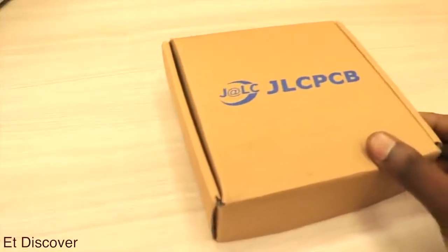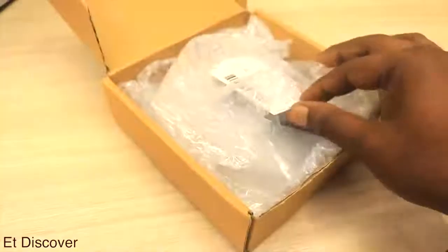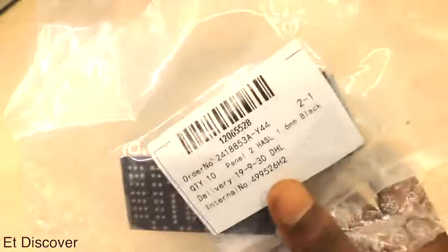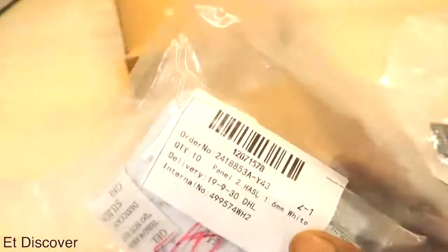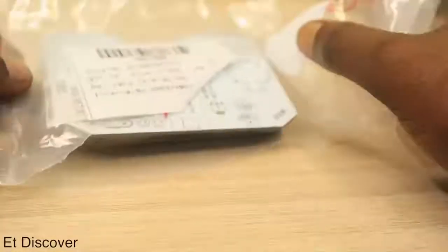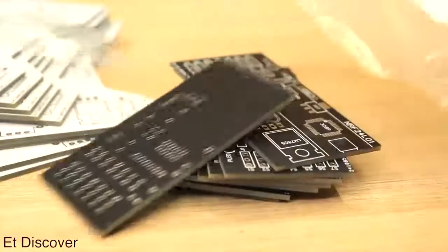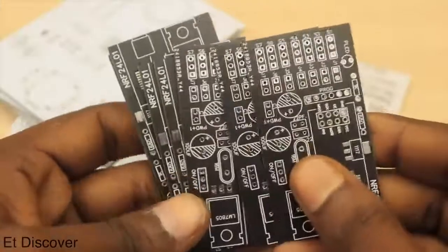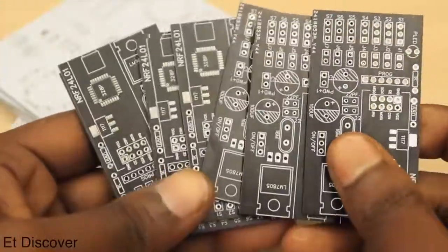After seven days later I received a box from JLCPCB. I found both PCBs in the same package as I expected. In this first look anyone can say the PCB is really awesome. If you want to make this transmitter and receiver for yourself, you can download it from the description box as always.